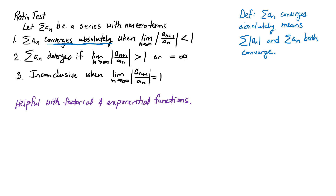Just to remind you, converges absolutely means that the series itself and the series of absolute values of the terms will both converge. This particular test is very helpful with factorial and exponential functions, so in this first segment we're going to look at how to simplify some complicated ratios involving factorials and exponentials.